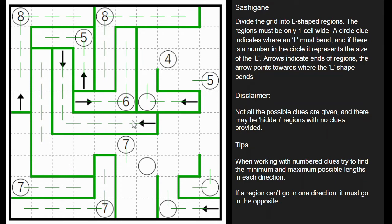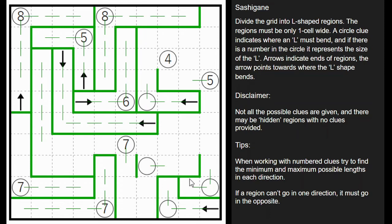This circle elbow can't bend to the left — we'd run into the seven — so it has to go right. I'll draw a little line to separate it. Now this region can't go up; it would run into the other one, so we have to cap it off like that.